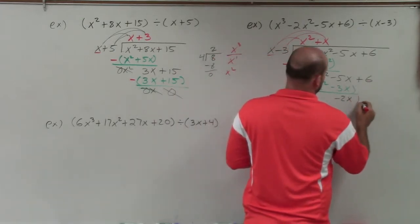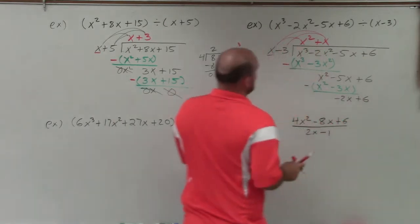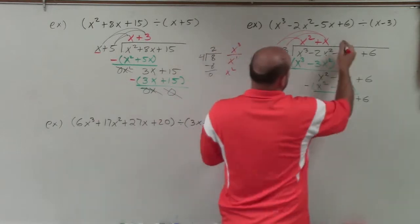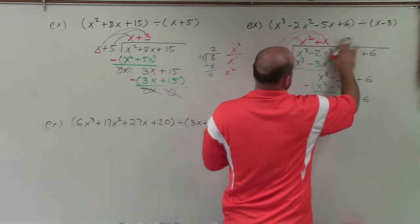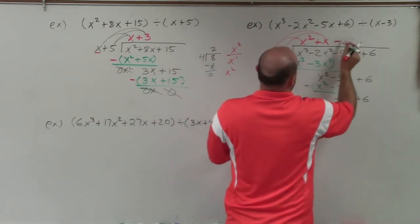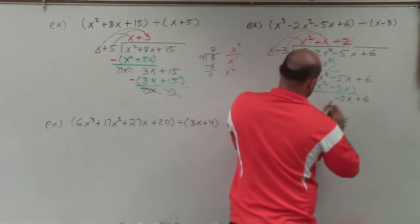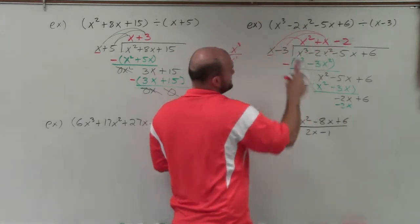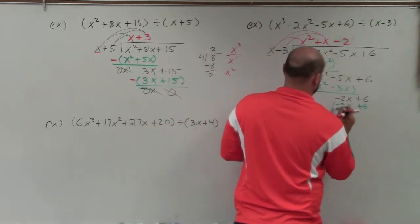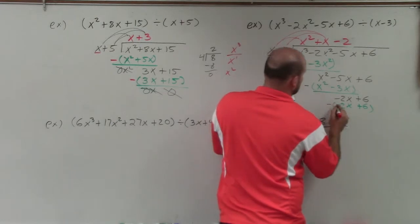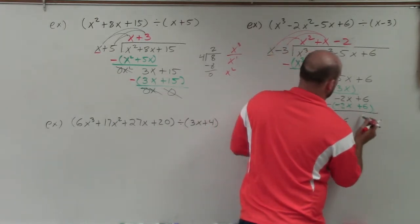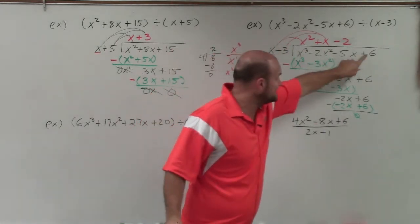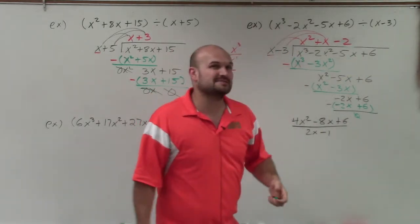Bring down plus 6. Now x divides into negative 2x — that's going to be negative 2 times. Negative 2 times x is negative 2x, and negative 2 times negative 3 is positive 6. Subtract and we get 0. So this divisor evenly divides into the dividend, giving a quotient of x squared plus x minus 2.